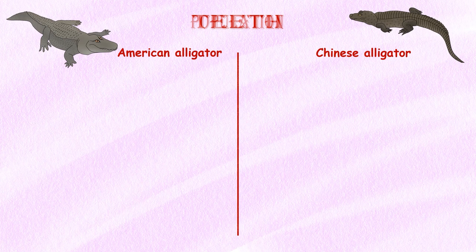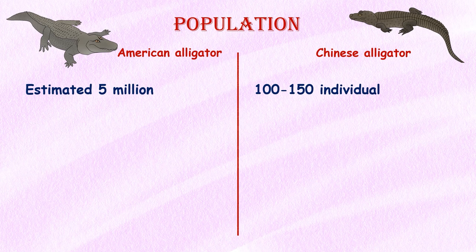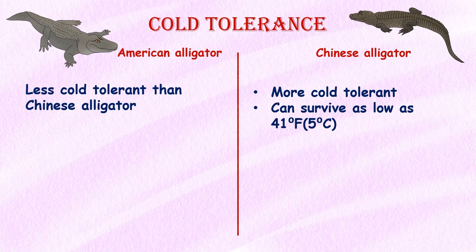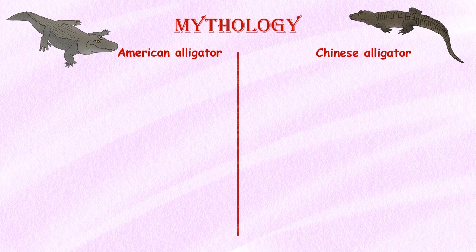Population. An estimated 5 million American alligators are spread out across the southeastern United States. As of 2021, there is a population of between 100 and 150 Chinese alligators left in the wild. Cold tolerance. Chinese alligators are adapted to colder temperatures than American alligators and can survive in temperatures as low as 41 degrees Fahrenheit.